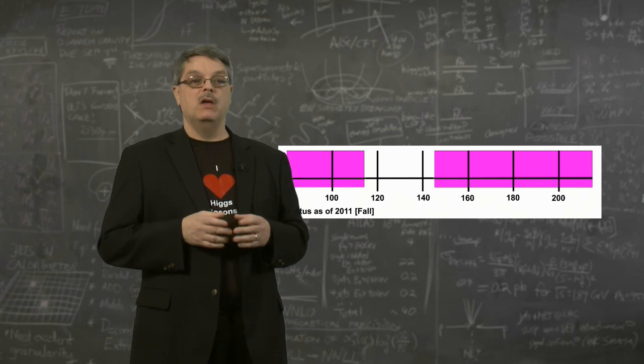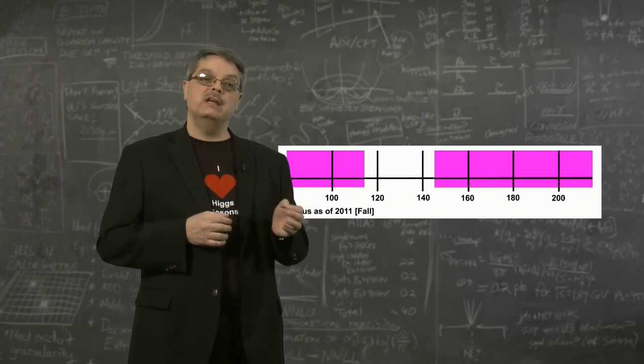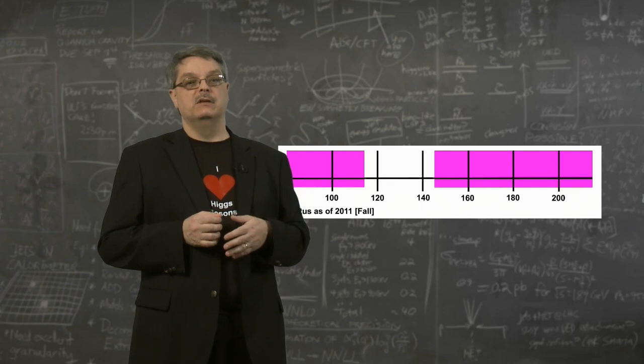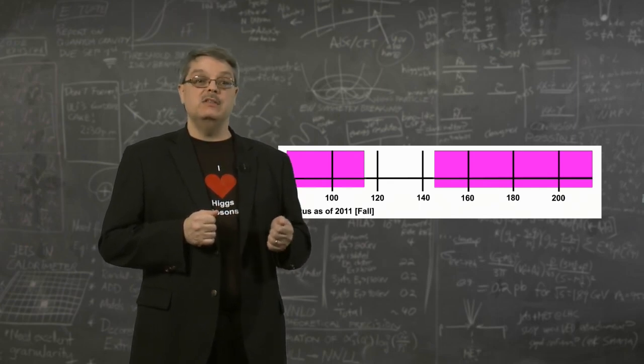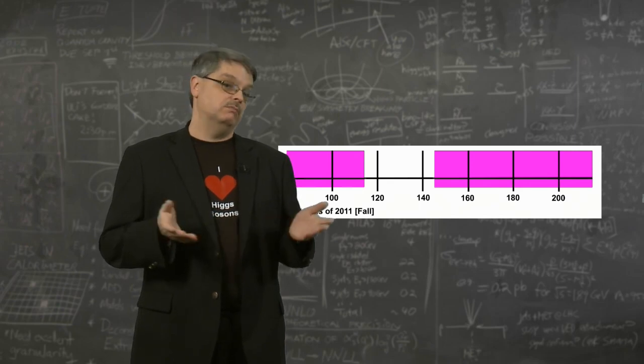So what will the future bring? Ongoing analysis of data taken at Fermilab and CERN will further narrow the range of possible masses. For instance, by the time you see this, it may be that we have also ruled out the range of 140 to 145 or even more.